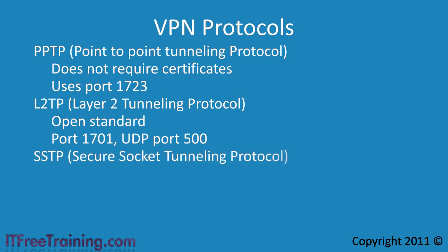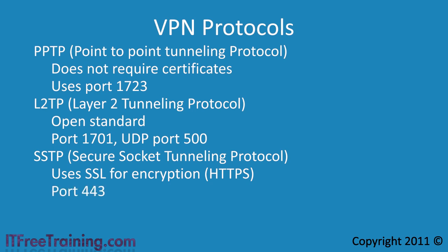The next protocol is Secure Socket Tunneling Protocol or SSTP. This was a new protocol introduced in Windows Vista. It uses SSL for encryption — in other words it uses HTTPS. Because it uses HTTPS, it runs over port 443, which may already be open on your firewall.